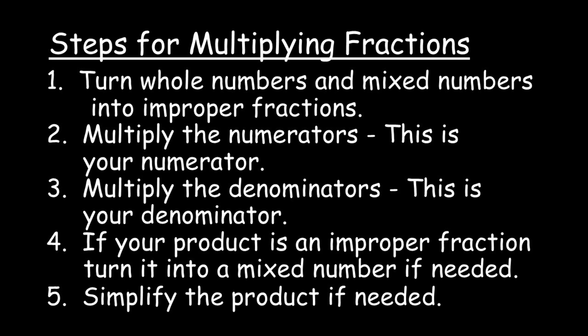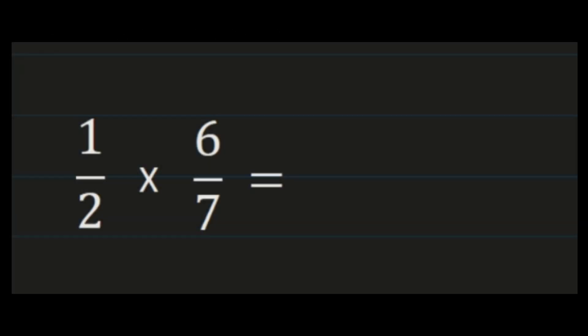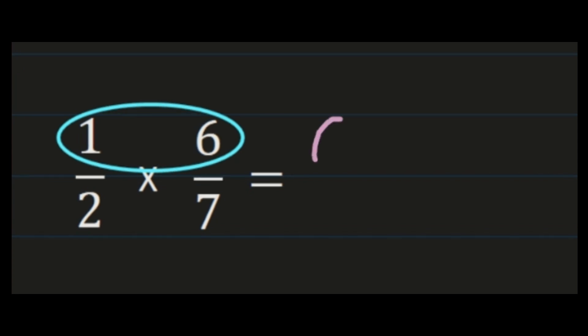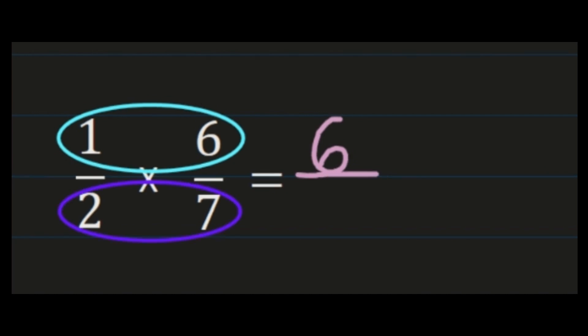For our first example we have 1/2 times 6/7. We start with the numerators and multiply them together. Our numerators are 1 and 6; 1 times 6 is 6, so 6 becomes the numerator in our product. Then we look at our denominators: 2 and 7. 2 times 7 is 14, so 14 becomes the denominator. So now we have 6/14.